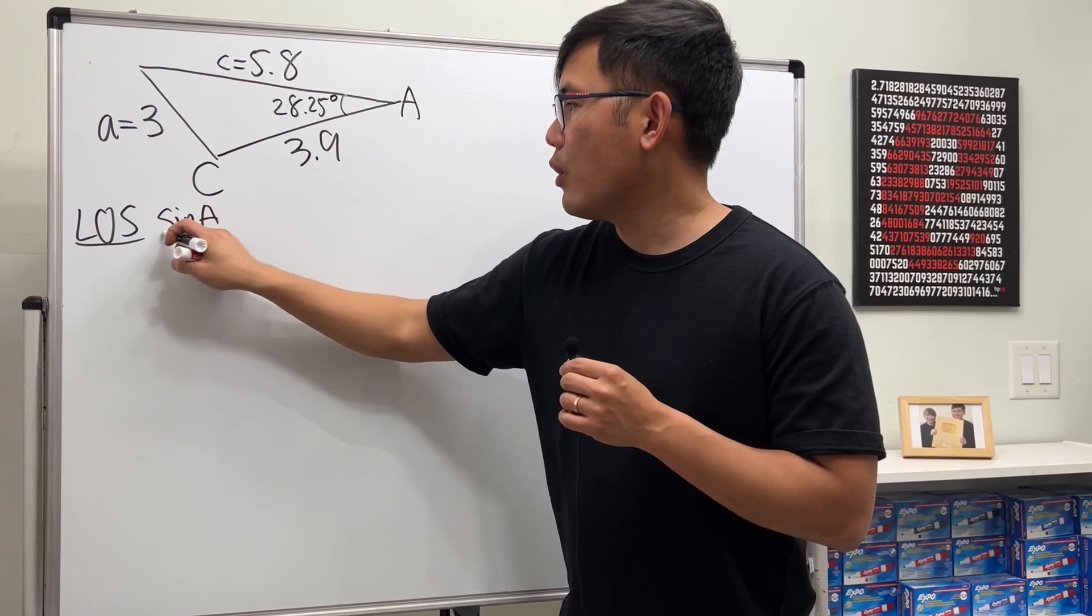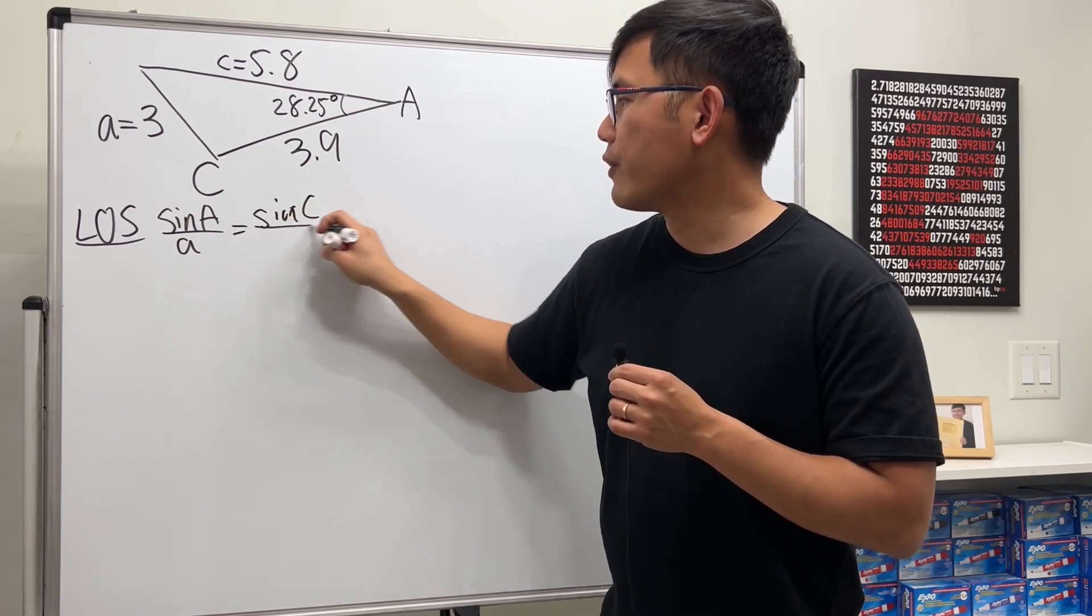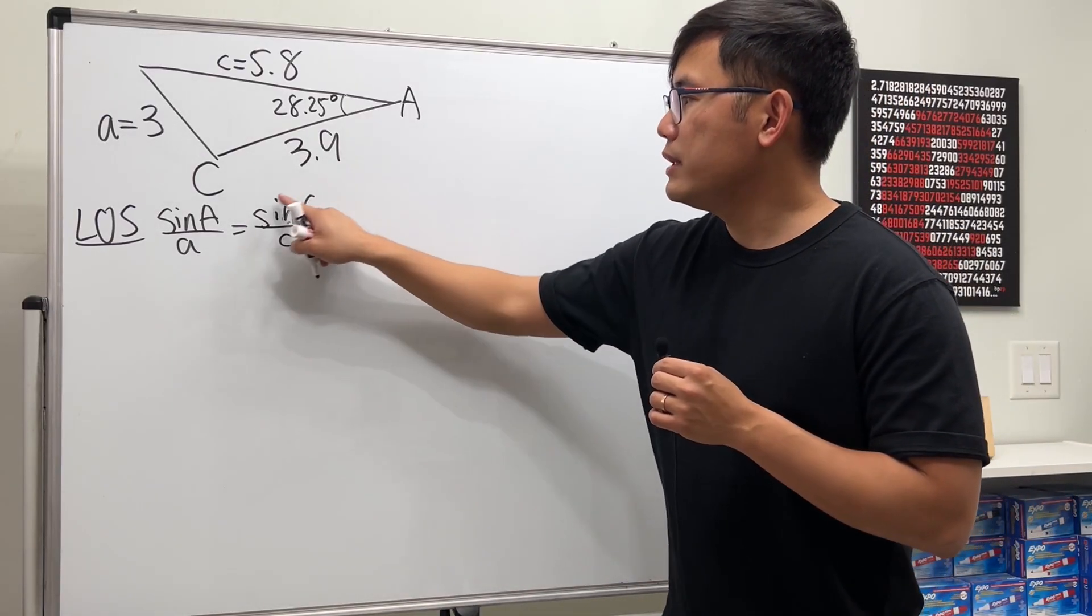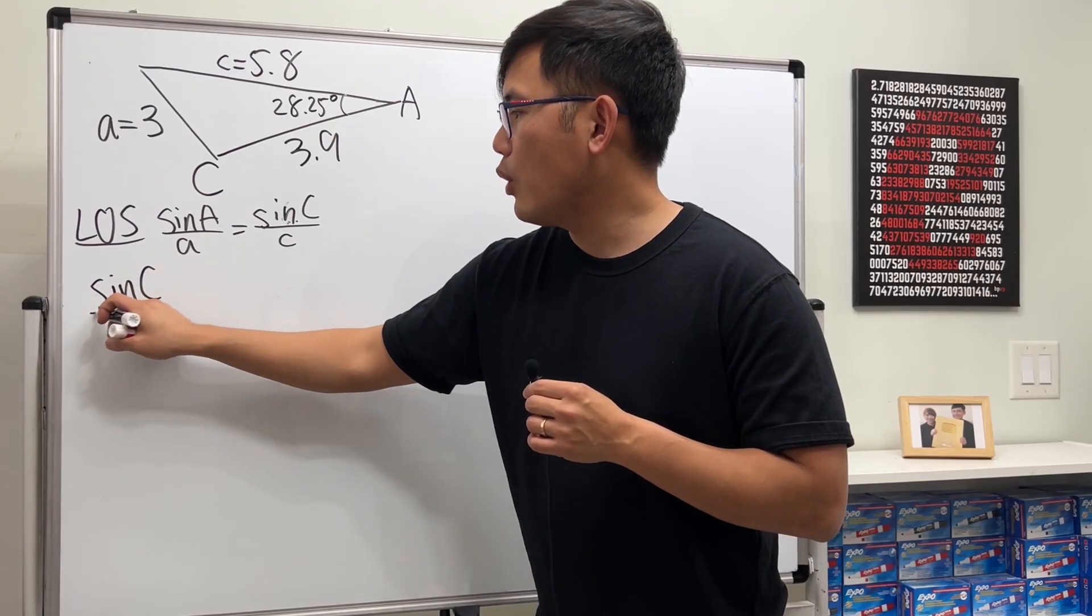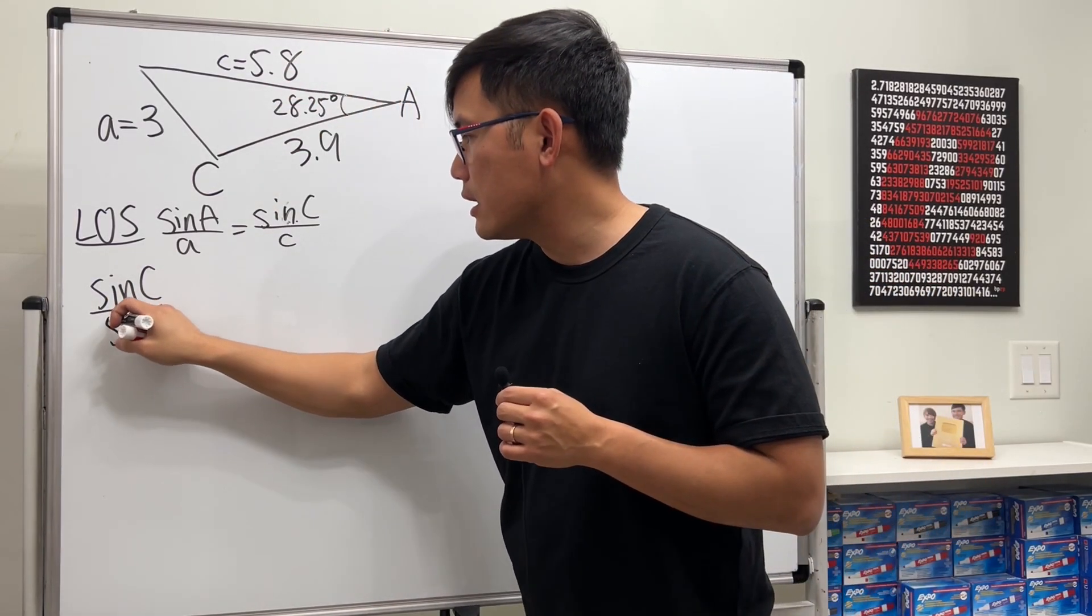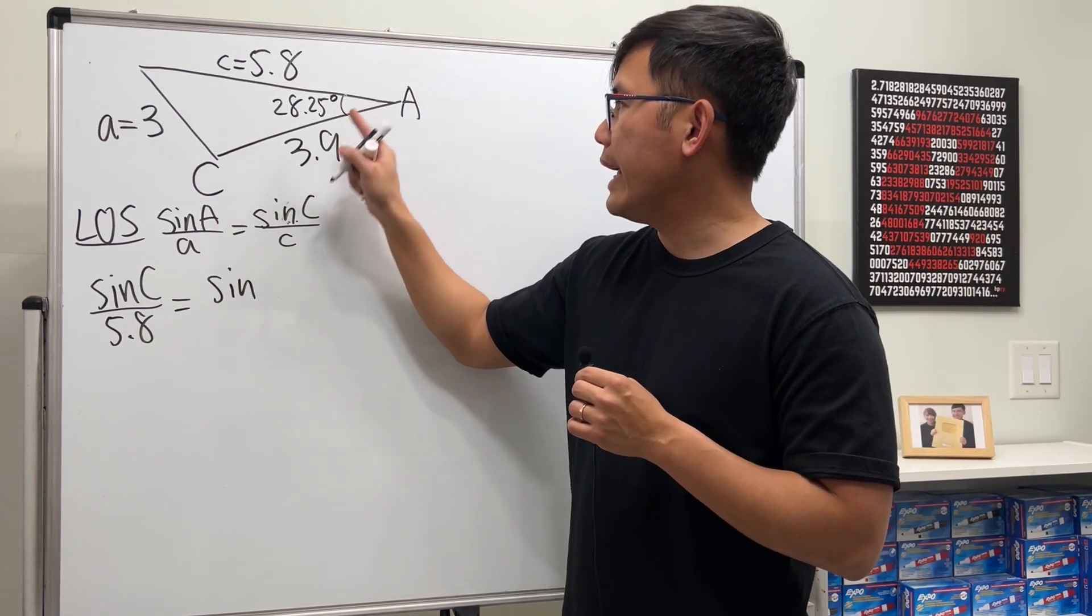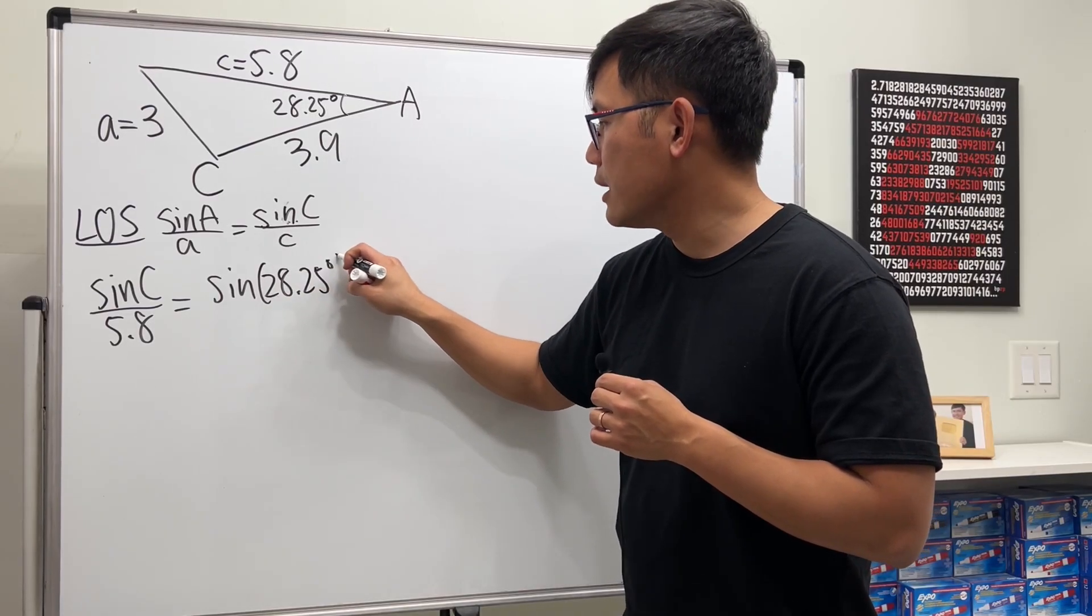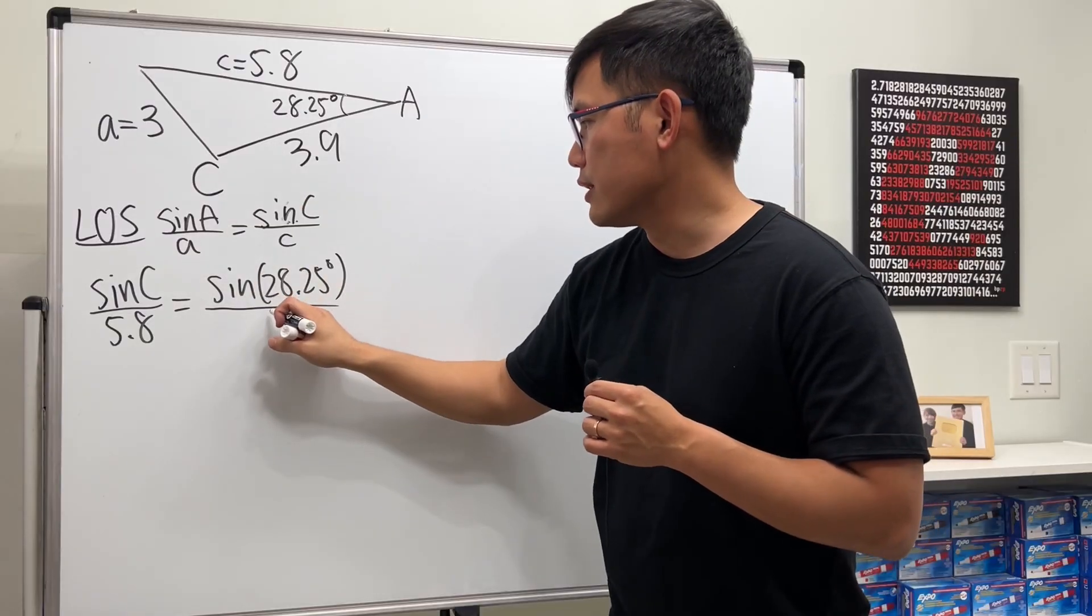And then plug in the numbers and solve it, right? Let me put this down right here first. Right here we have sine C over its corresponding side, which is 5.8. And then that should be equal to sine of angle A, which is 28.25 degrees. And then we have to divide that by its corresponding side, which is just a 3.